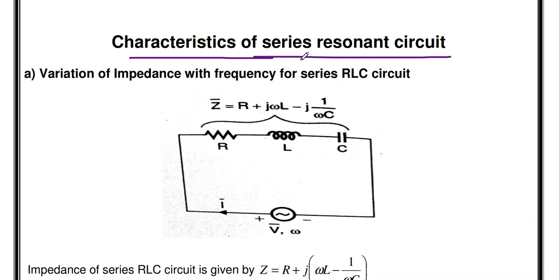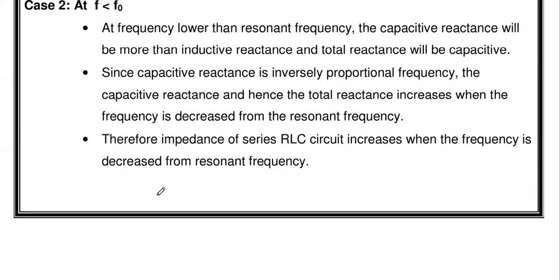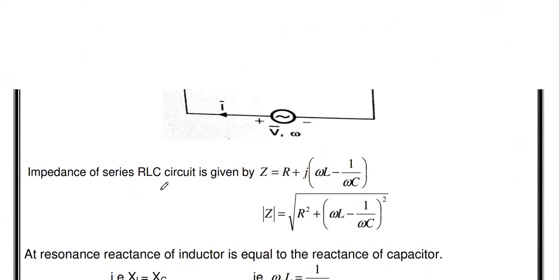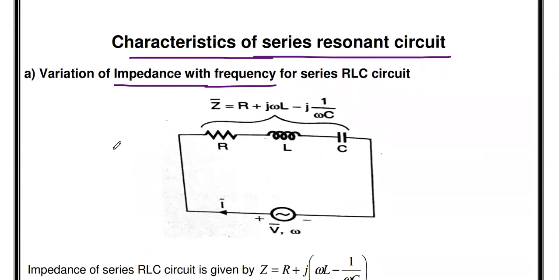Under the characteristics of the series resonant circuit, we will first see how the impedance varies with respect to frequency, then how the current flowing through the series RLC circuit varies with respect to frequency. We will also derive the bandwidth and half power frequencies. Then quality factor and selectivity will be discussed. In this video we will cover the two characteristics: impedance variation and current variation with respect to frequency. In the next video we will discuss the bandwidth and selectivity.